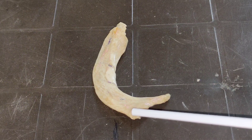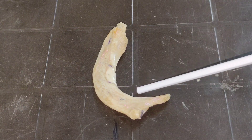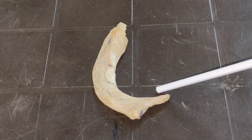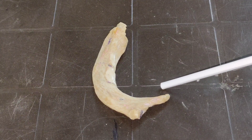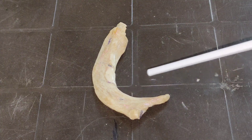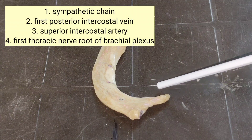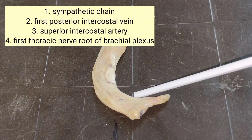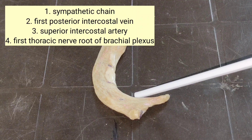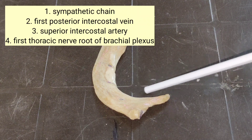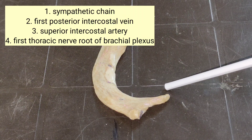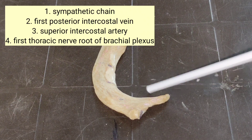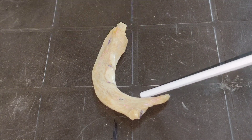The most important question concerns the relations lying in front of the neck of the first rib. In front of the neck, there are four structures from medial to lateral: the sympathetic chain, then the first posterior intercostal vein, then the superior intercostal artery, and laterally the first thoracic nerve, which is actually the root of the brachial plexus.